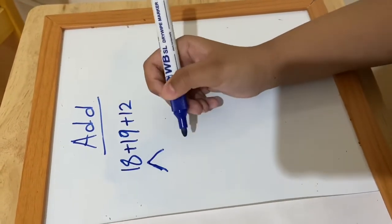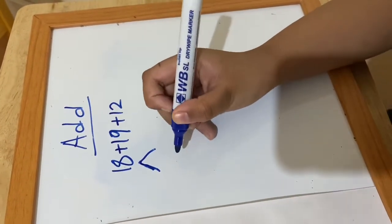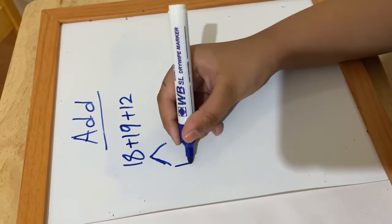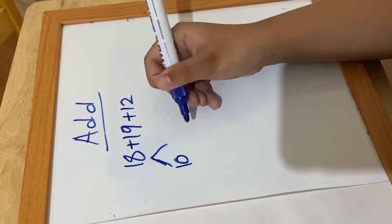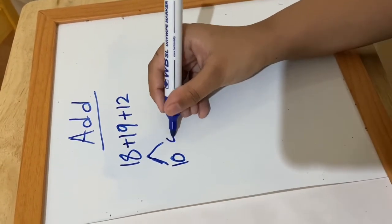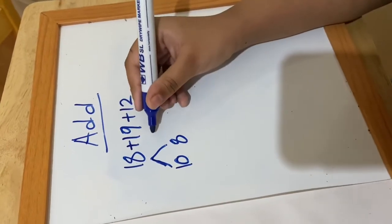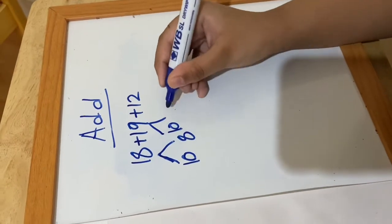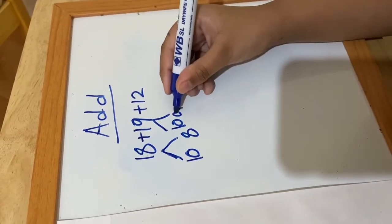18, you need to break 18 apart. How many tens? There's one ten in 18, so I'm going to put 10 here. And there's eight units in 18, so I'm going to put eight units here. And do the same with the rest: how many tens and how many units?